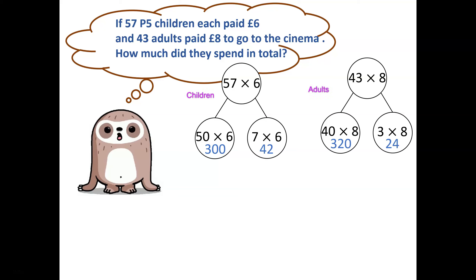My part-whole models show the multiplication calculations needed. The first part-whole model shows us the calculation needed to find out how much the children spent. Fifty-seven multiplied by six has been partitioned into its tens and ones: fifty multiplied by six and seven multiplied by six. Seven multiplied by six is forty-two and fifty times six is three hundred.